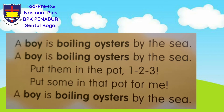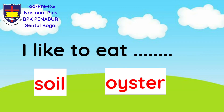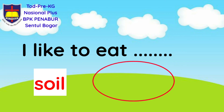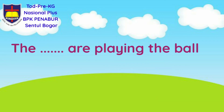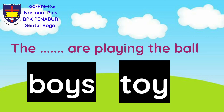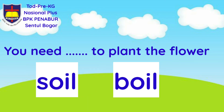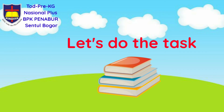Good job, Ketu. Now let's try to read the sentence and complete the missing word. 'I like to eat...' What is the correct answer? Can you point to the correct answer? I like to eat oyster. Good. How about this? 'The boys are playing the ball.' Good job. How about this? 'You need soil to plant the flower.' Good job, Ketu.